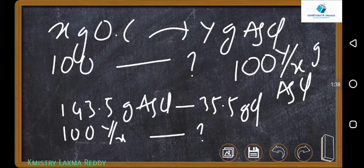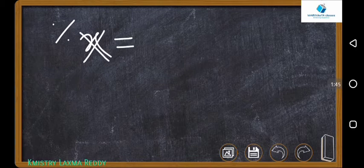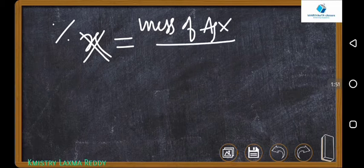This is the Karius method formula. So, simply we will write, percentage of halogen X is equal to mass of AgX by mass of organic compound